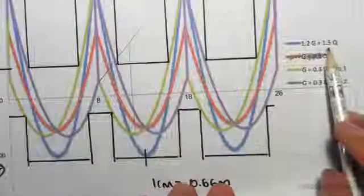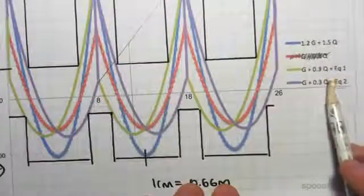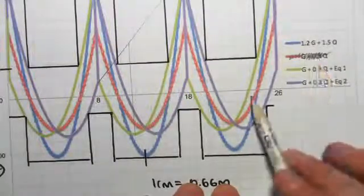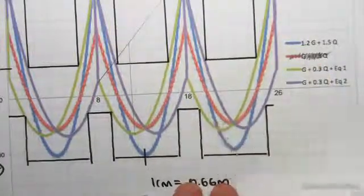And as I said, we're going to be doing it for three different cases: 1.2G, 1.5Q, and these two earthquake cases. We've eliminated that one because it never actually formed our envelope.